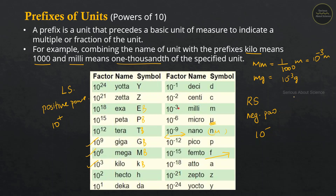A common unit is the Angstrom, which is 10 raised to minus 10 meters. The radius of a hydrogen atom is expressed in Angstroms. Similarly, the femtometer (fm) is 10 raised to minus 15 meters. The radius of an atom is 10 raised to minus 10 meters, while the radius of the nucleus is 10 raised to minus 15 meters.